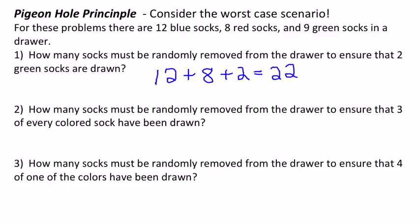This is actually a very similar problem. The worst case scenario would be drawing 12 blues and... oh, actually 12 blues and 9 greens - that's a mistake that's easy to make on that problem. You want to take the two worst, which would be blues and greens, because those are the two most socks. And then, after we drew all of those socks out, we have to draw the three red socks. Now we have three of every color drawn, and so that's going to be 24 socks.